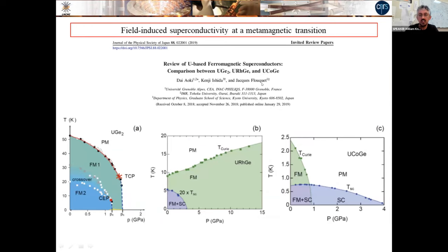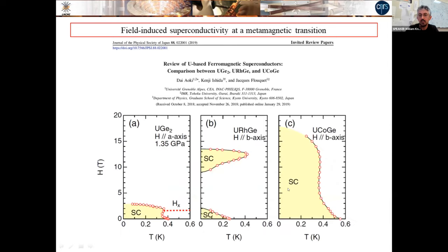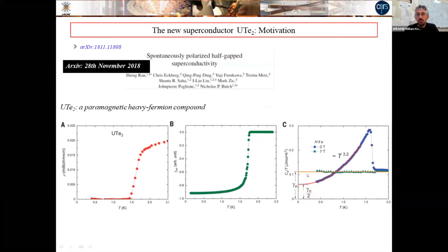There is a review from Daoyuki, Ishida, and Jaccard considering the three ferromagnetic compounds: UGe₂, URhGe, and UCoGe. These three are ferromagnetic compounds where superconductivity occurs under pressure for UGe₂ and at ambient pressure for the other two. There is a field-induced phase for URhGe, and reinforcement of superconductivity in UCoGe for field along b, and in UGe₂ under pressure. This seems very general. Now I move to the topic of uranium telluride, a new superconductor discovered less than two years ago by the American group of Butch in a paper by Ran put on archive in 2018.